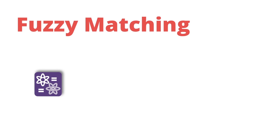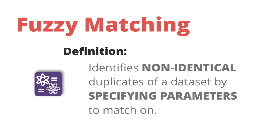So this is where fuzzy matching comes in. Fuzzy matching is really powerful, and it'll enable you to join two data sets together where a regular join may fail. Fuzzy matching identifies non-identical duplicates of a data set by specifying parameters to match on. The values don't have to be exactly the same because fuzzy matching uses algorithms to score how similar two words or phrases are.